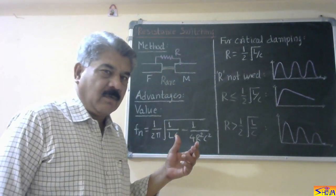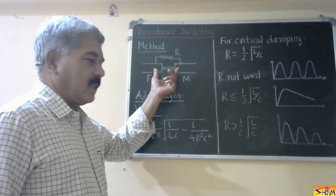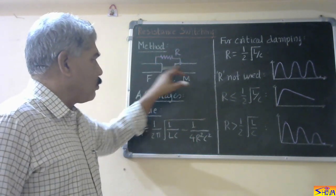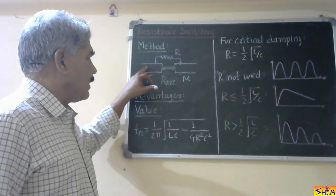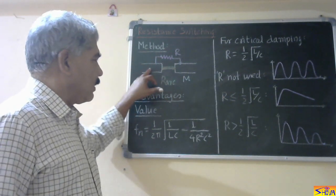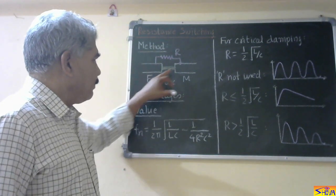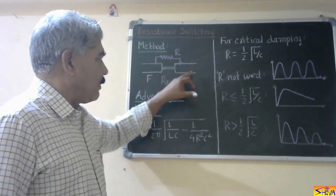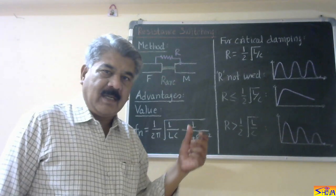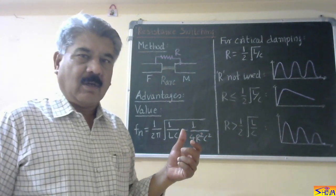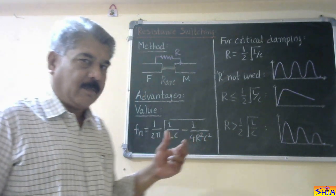In resistor switching, what we do is we connect the resistor across the circuit breaker poles. These are two poles of the circuit breaker — one is fixed and one is movable. A resistor, it can be linear resistance or it can be nonlinear resistance, is connected across the circuit breaker poles.